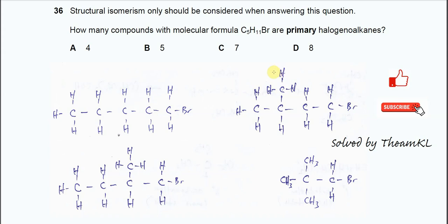Question 36. Structural isomerism only should be considered when answering this question. This is a very important statement because it's telling us for those compounds with chiral centers we will not consider the stereoisomerisms or stereoisomers that form. So this means we just need to know the structure of the isomers that are involved.